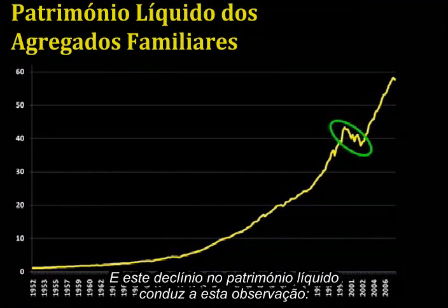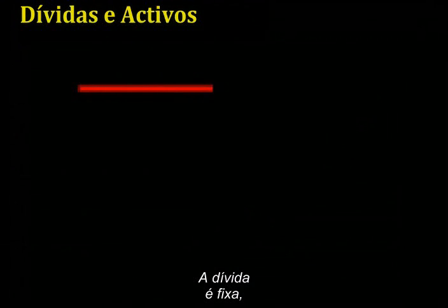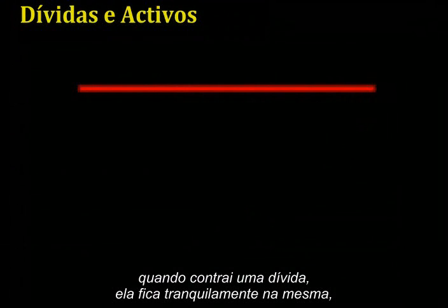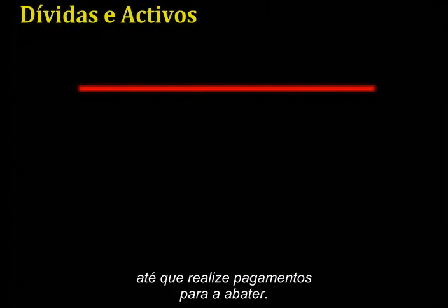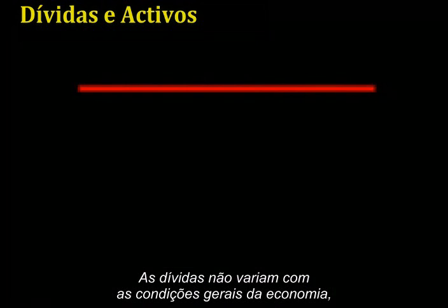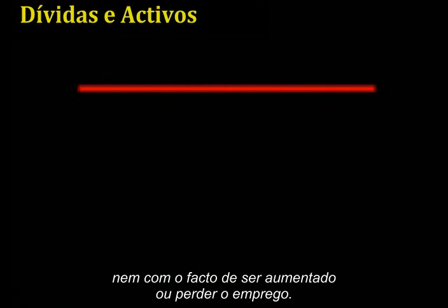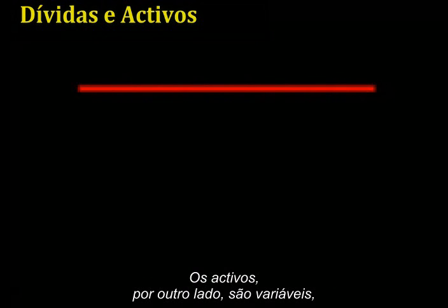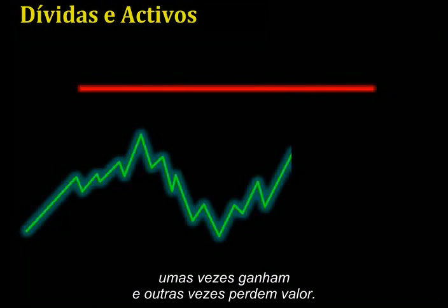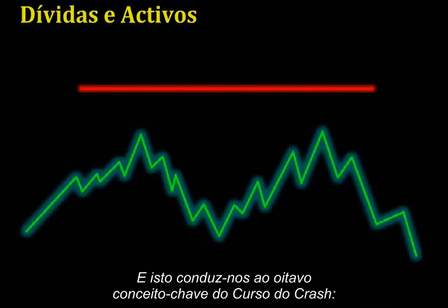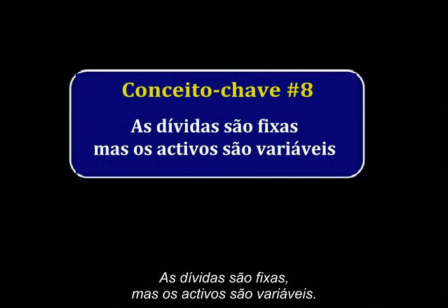And this decline in net worth leads to this observation. Debt is fixed — when you take on a debt, there it placidly sits until and unless you make payments on it. Debts do not vary with the general economic conditions, or whether you get a raise or lose your job. Assets, on the other hand, are variable, sometimes gaining and sometimes losing value. And so this leads to the eighth key concept of the crash course: Debts are fixed, but assets are variable.